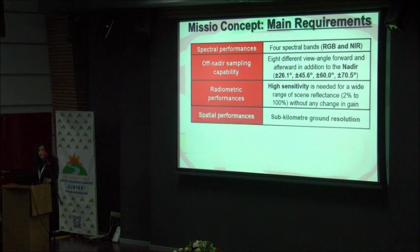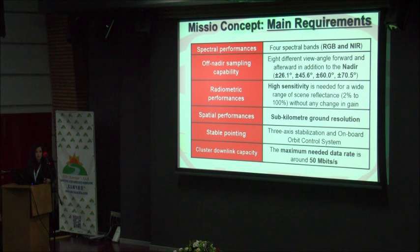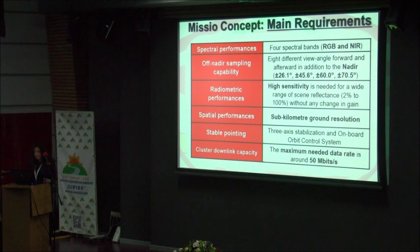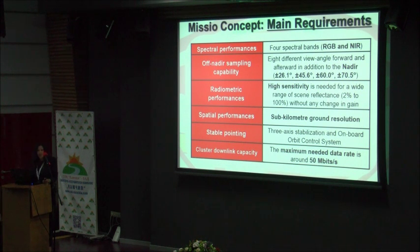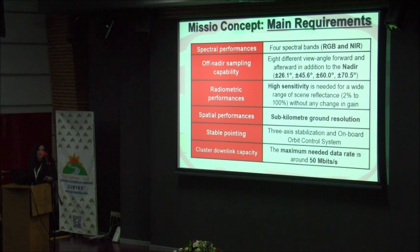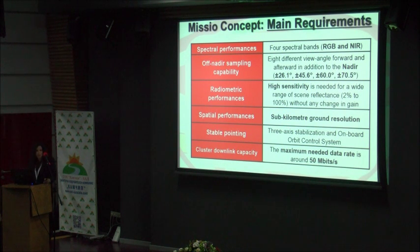These are the main requirements of our mission. We want to obtain 9 views and gather information in the same 4 spectral bands — RGB and near infrared. For the radiometric performance, we have very high sensitivity requirements. Based on the MISR requirements, we need sub-kilometer ground resolution and stable pointing, requiring both attitude and orbit control systems. We also need up to 50 megabits per second for data downlink.